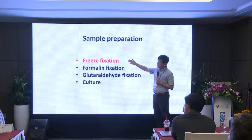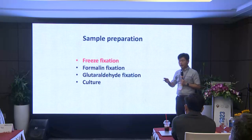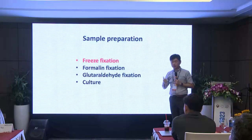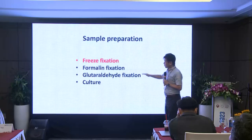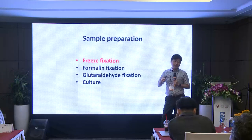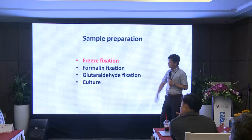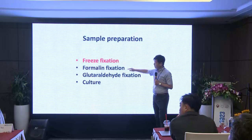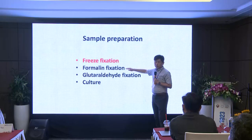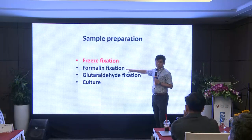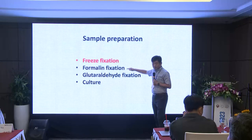For fixation, we historically use freeze fixation, not formalin fixation for muscle. Because for muscle pathology we do a lot of enzyme histochemistry — SDH, COX, ATPase, NADH, esterase — all enzymes. If you use formalin fixation, proteins will be denatured, and enzymatic activity will be destroyed. So almost all muscle pathology laboratories in the world don't do formalin fixation. Some laboratories with a general pathology background insist on it, but the main part should always be frozen — the formalin fixed portion can only be a small part.